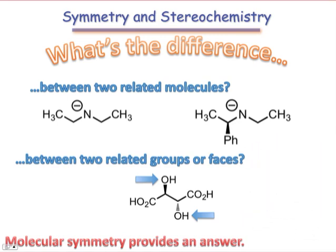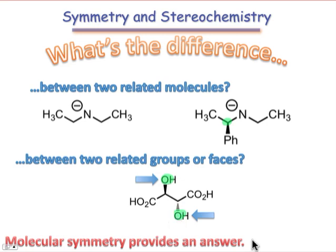For example, are there any reactivity differences between these two bases? One of them has a stereocenter and one of them does not. What are the consequences of the stereochemistry on the reactivity of these two molecules? We also might want to know something about the functional groups within a molecule — can we expect any difference in reactivity between these two hydroxyl groups? The answers to questions like this are going to be found by an analysis of the molecule's symmetry.